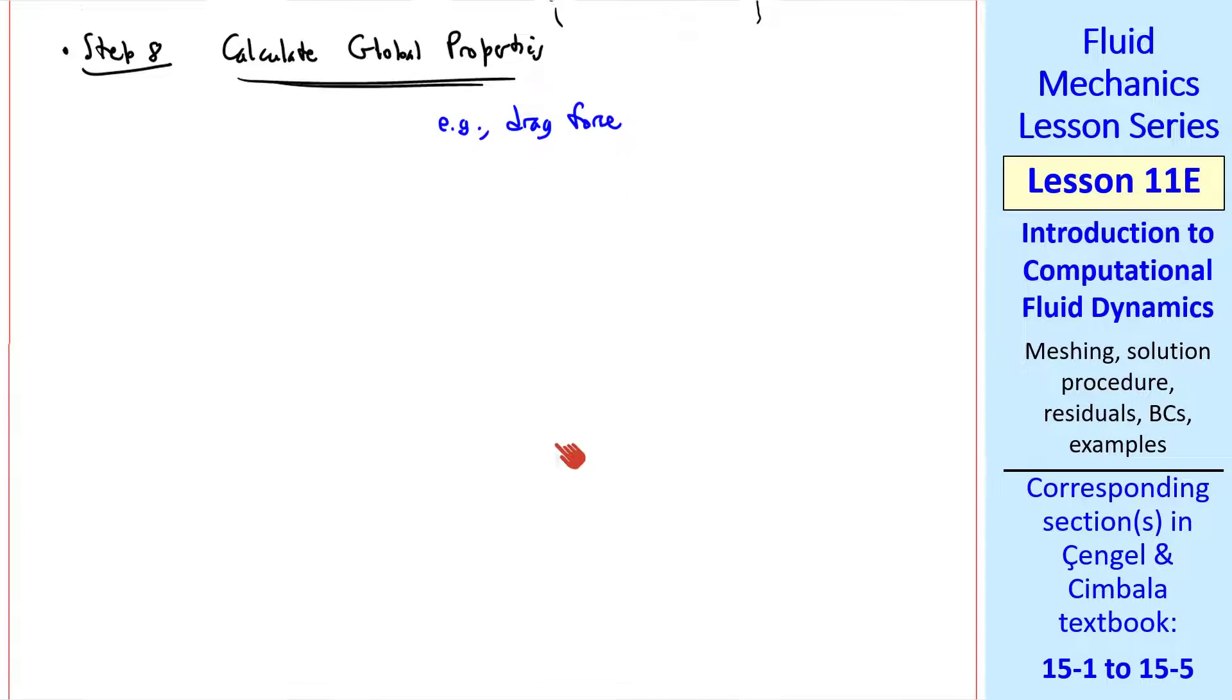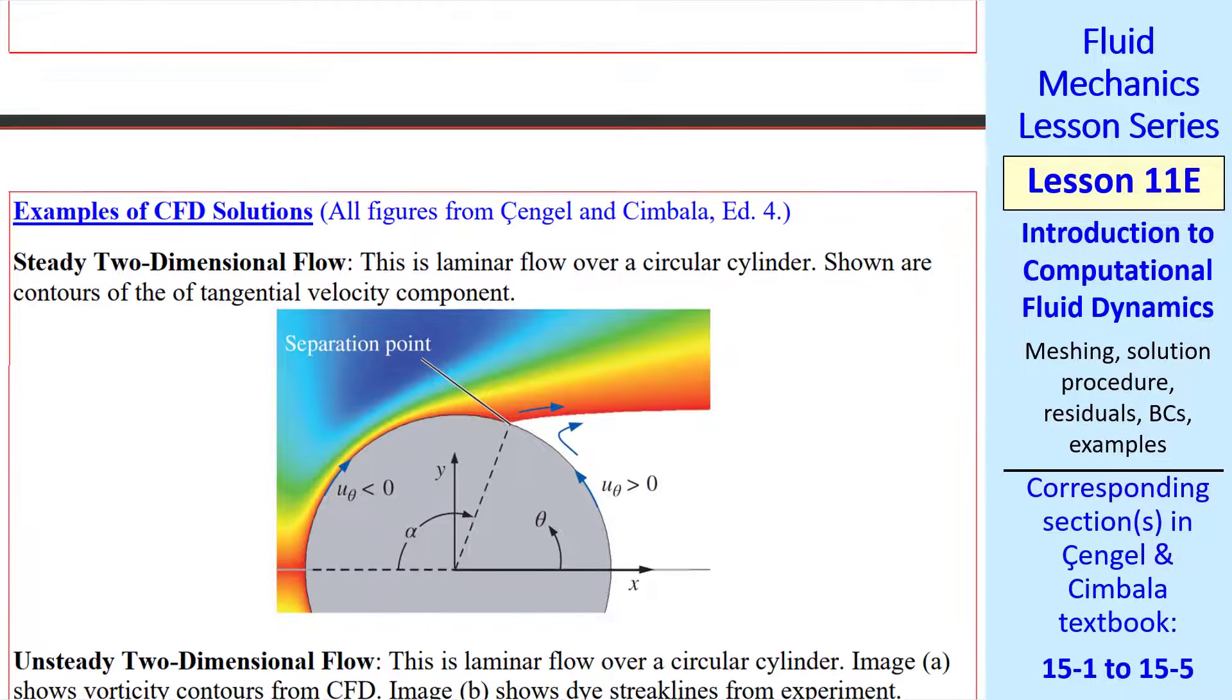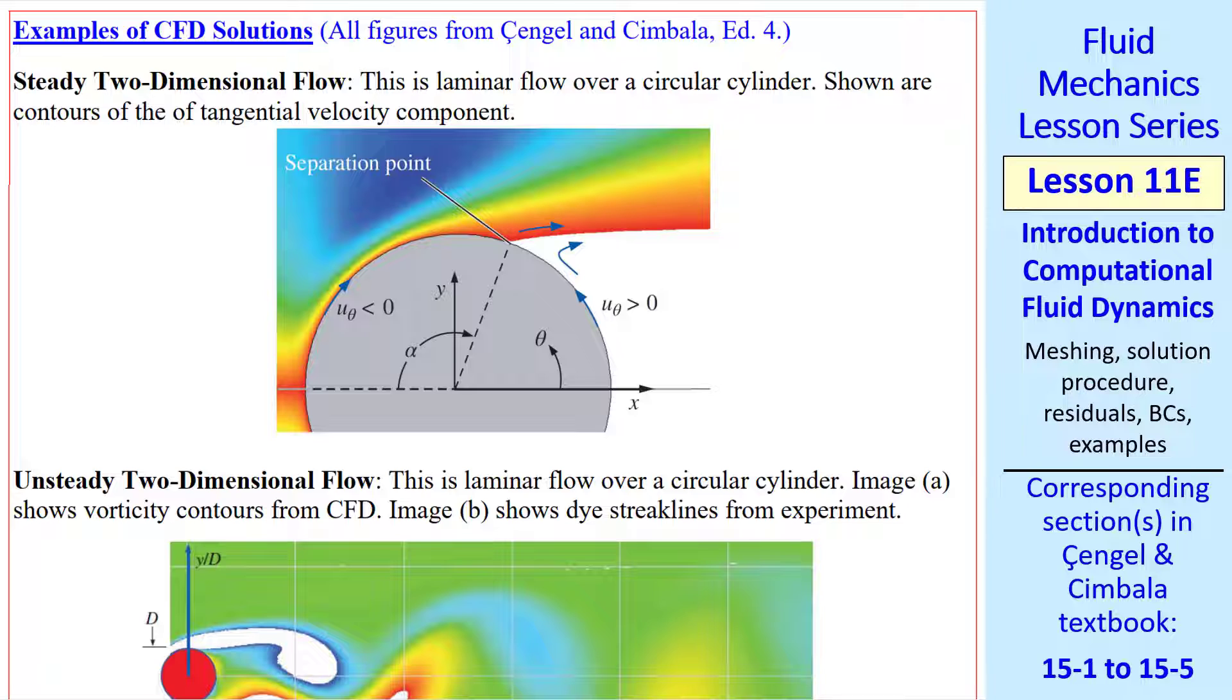Next, I'll show some actual example problems. These are pictures from my book for problems that I solved using CFD. Here's an example of steady 2D flow over a cylinder. We're plotting tangential velocity contours, u theta. And in this problem, we were determining the separation point at some angle alpha.